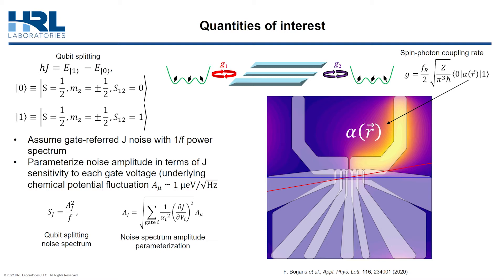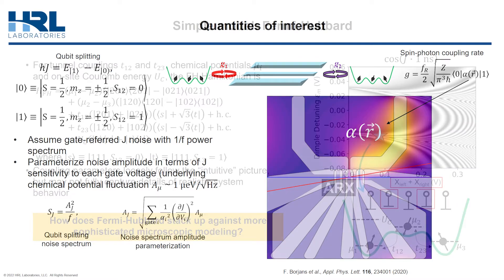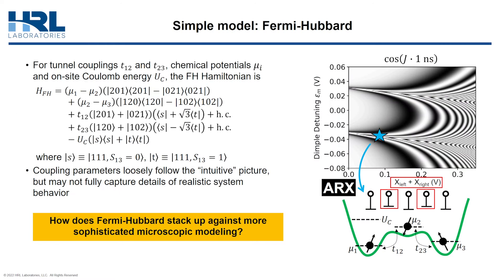The thing I want to emphasize is that computing this matrix element accurately in general requires detailed knowledge of the microscopic wave functions. But first, let's look at a simple model in the form of the Fermi-Hubbard Hamiltonian expressed in a six-state basis.